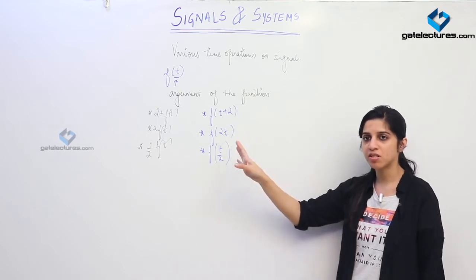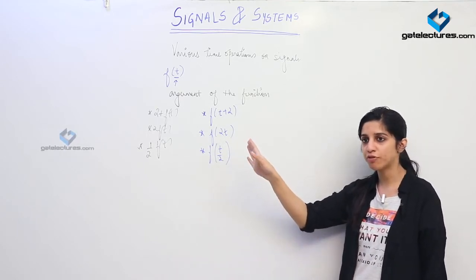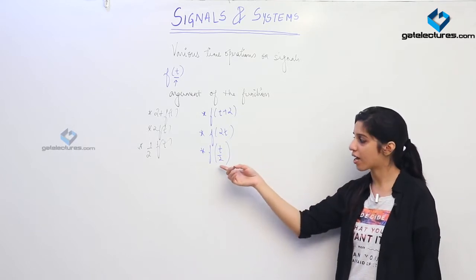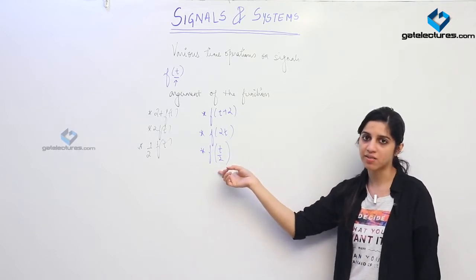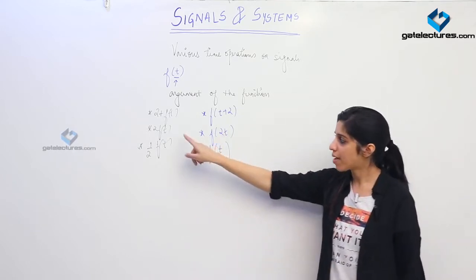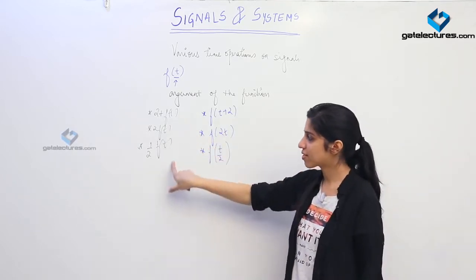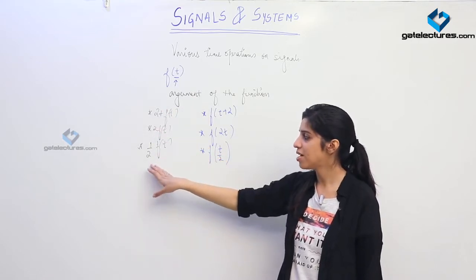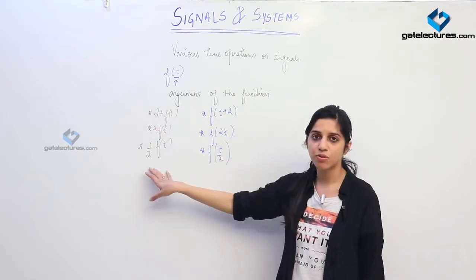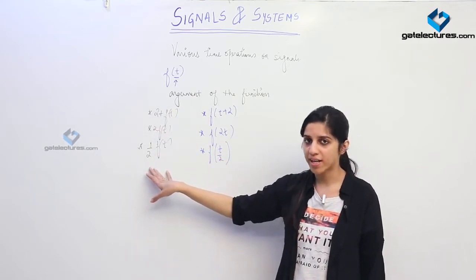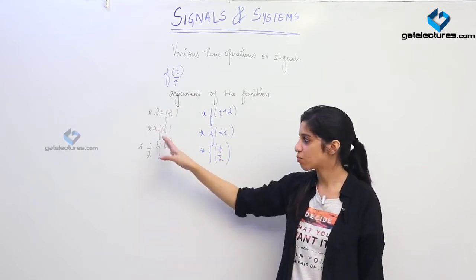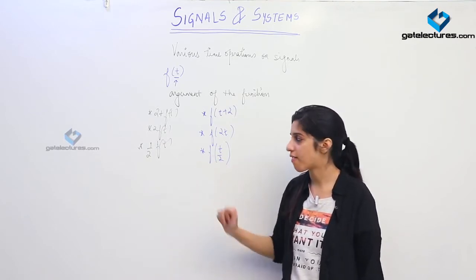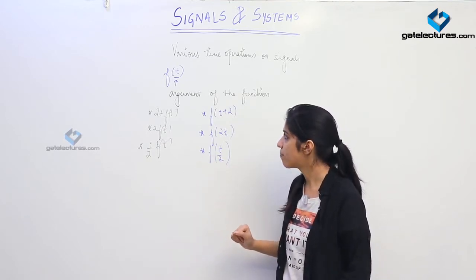The function is just going to shift on the x-axis, on the argument axis. When performing these kind of operations on the function itself, the value is going to change on the y-axis — this is going to affect the function's output or the y-value of the function.